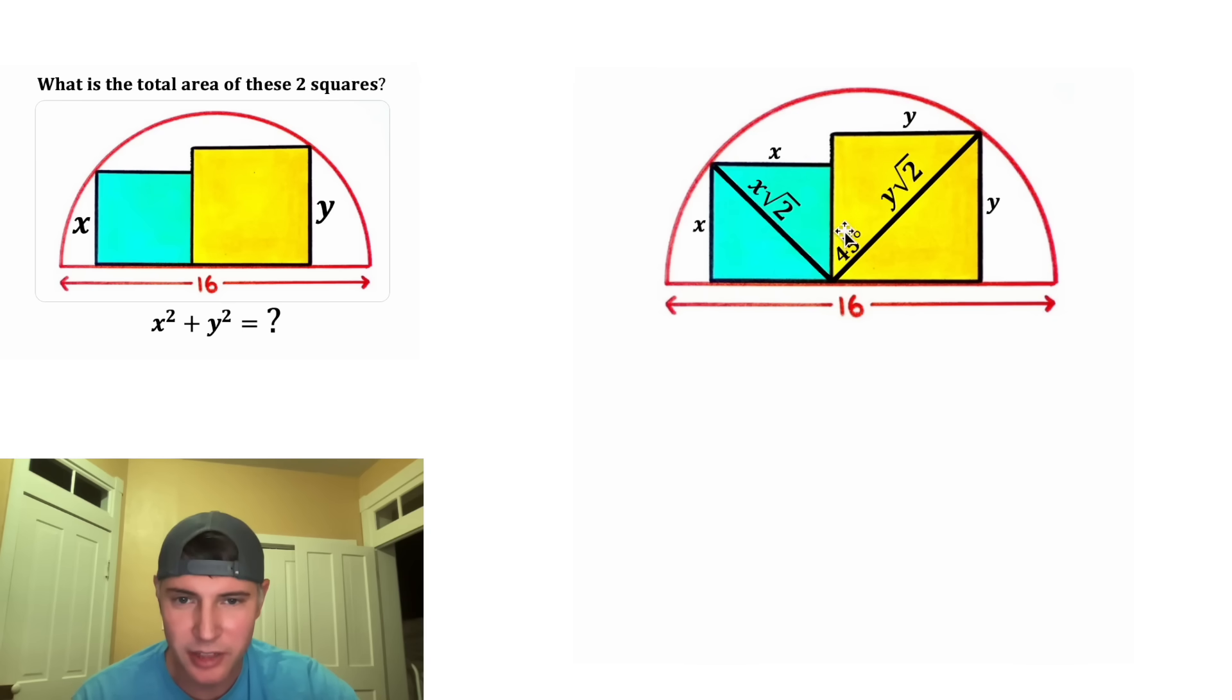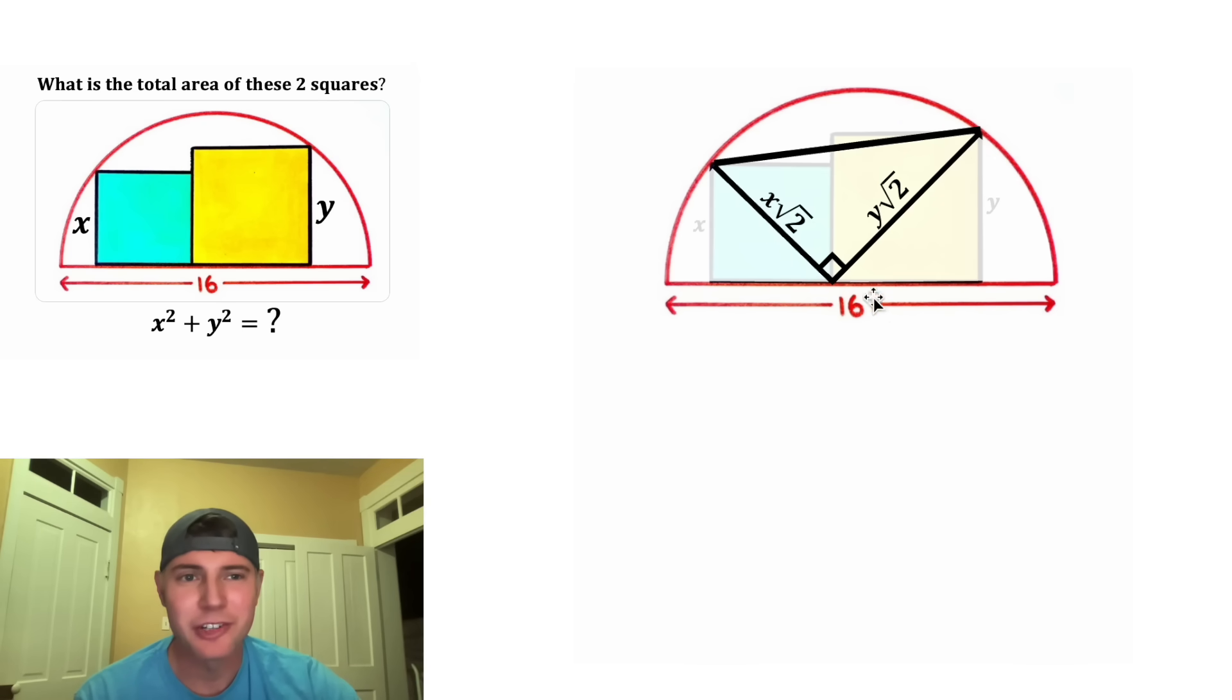And the same thing will happen here. This will cut the angle in half. So this will also be 45 degrees. And the 45 plus the 45 means the two diagonals will meet at 90 degrees. And if we focus on those diagonals and connect this from here to here, we now have a right triangle. Let's label the hypotenuse c and the two legs a and b.